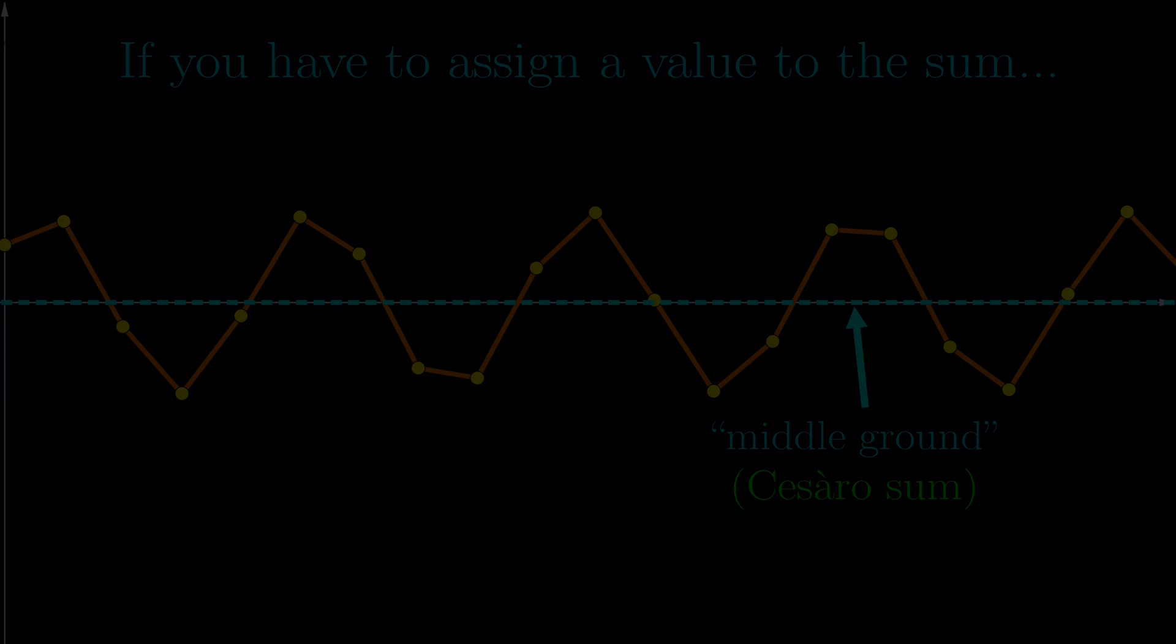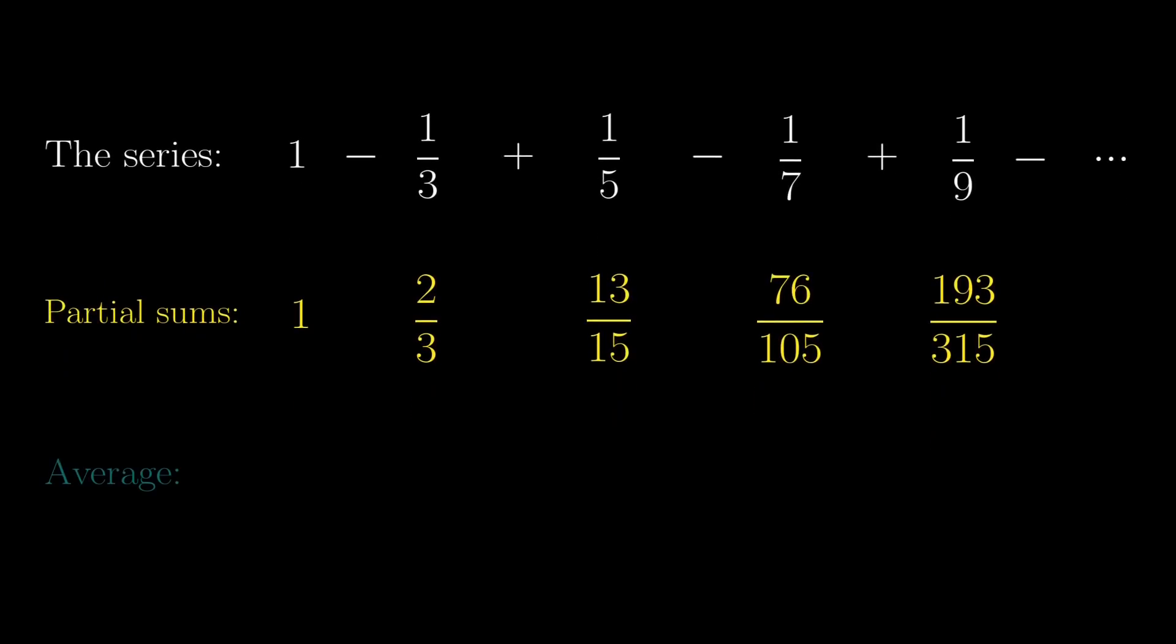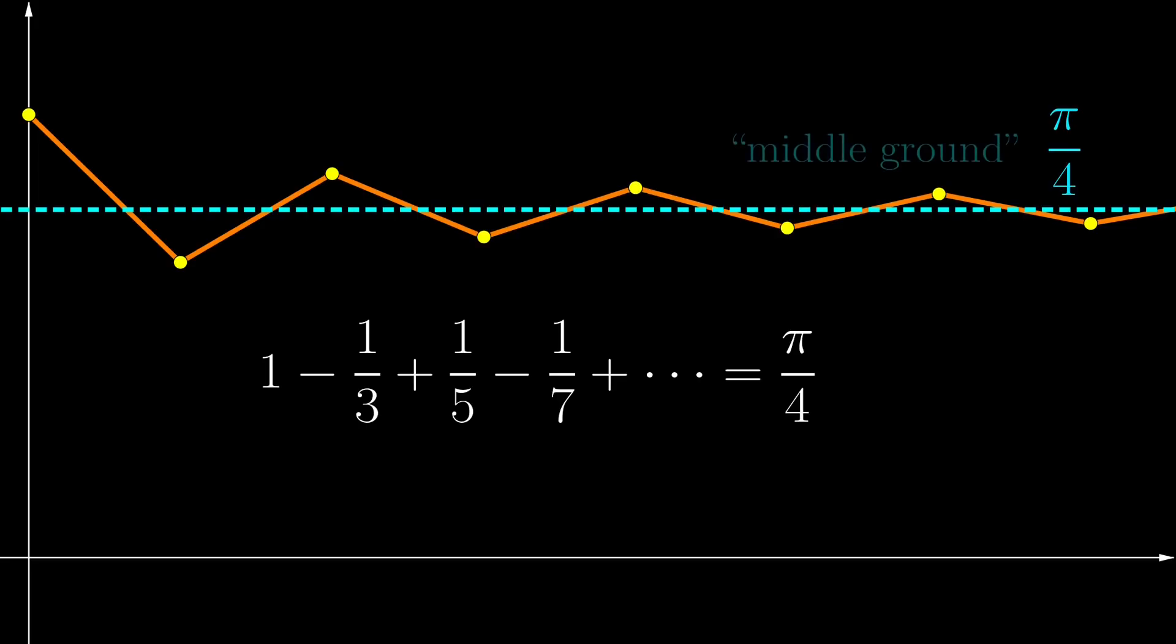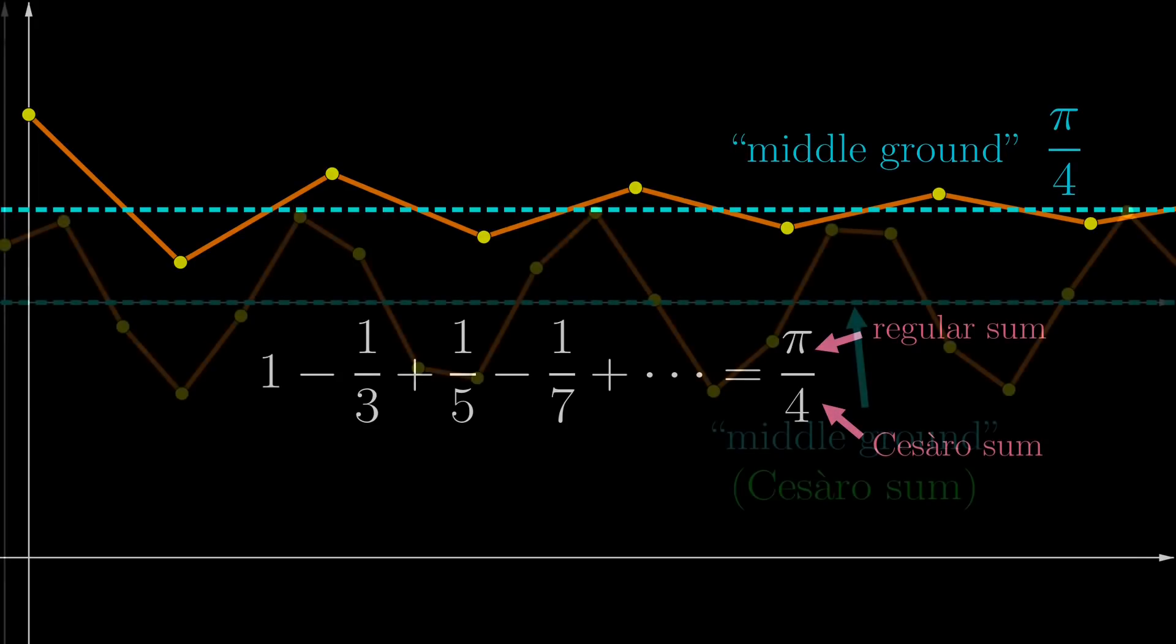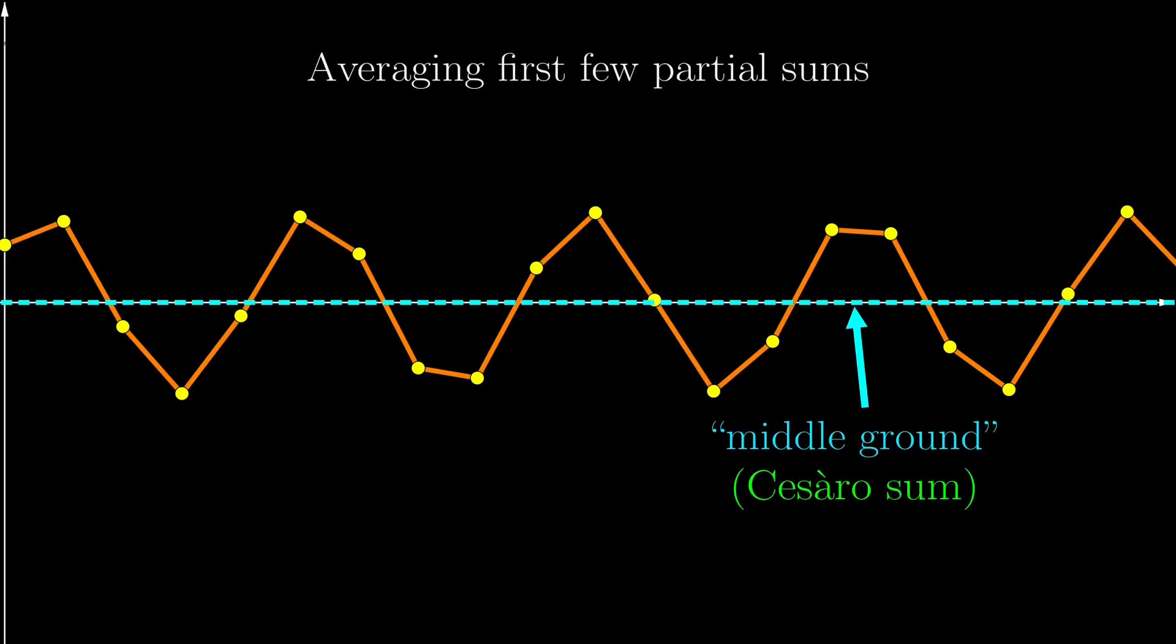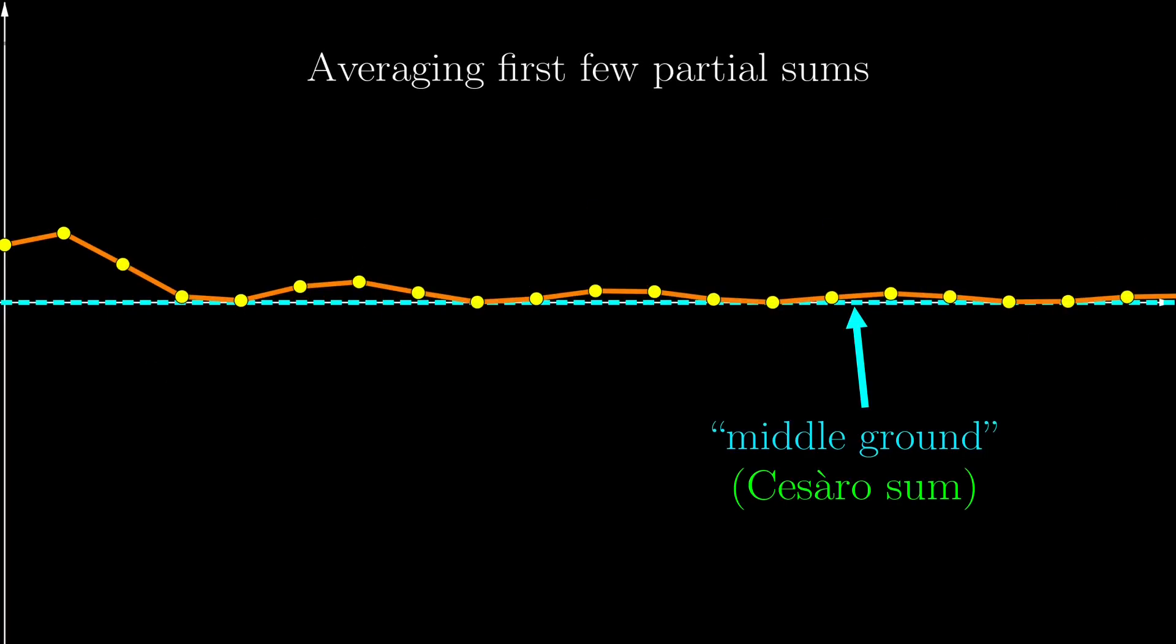This middle ground is called the Cesaro sum of this series. More precisely, we don't just consider the partial sums themselves, but rather, we take the average of the first few partial sums, and then see whether the averages themselves converge or not. If it does, it will converge to that middle ground. But in this series, because the partial sums already converge to pi over 4, this will also be the middle ground. So pi over 4 here acts as both the regular sum, and the Cesaro sum of the series. But in summing the positions of the tips, if we actually take the average of the first few partial sums, we will instead get this graph, where we can see directly that the average does go to 0. This is what we really mean when we say that the sum is 0, the Cesaro sum is 0. So hopefully, this is a more complete justification of how this argument really works.